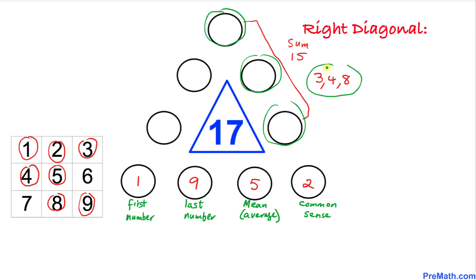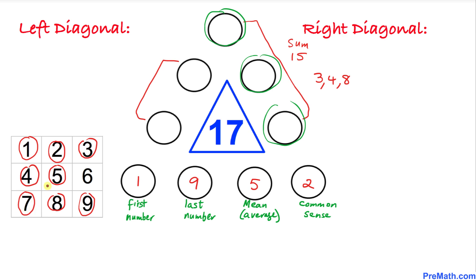For the left diagonal, we are left with two circles and two numbers: 6 and 7. Placing 6 in one circle and 7 in the other, we check: 1 + 6 + 7 = 14, so the shared corner circle must be 3 to reach 17. Confirming: 3 + 7 + 6 + 1 = 17. The left diagonal works.